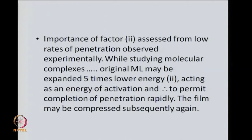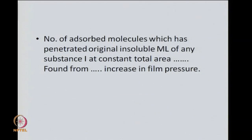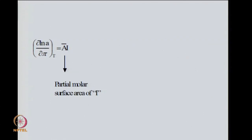Originally the monolayer may be expanded five times and we may have an energy of activation which will permit completion of penetration rapidly, and we may be able to compress this film subsequently again. The number of adsorbed molecules which have penetrated the original insoluble monolayer of any substance i at constant area can be found from the increase in film pressure. The relevant equation is: (∂ ln A / ∂π)_T = Ā_i, where Ā_i is the partial molar surface area of i.